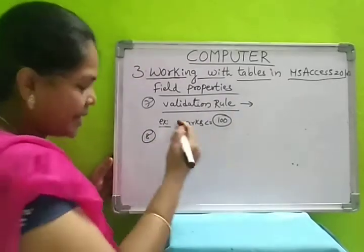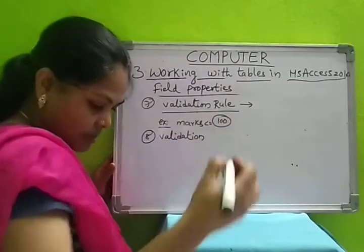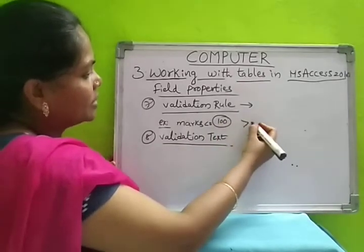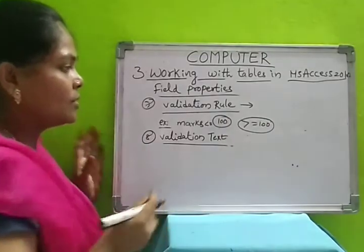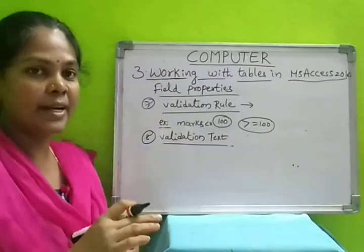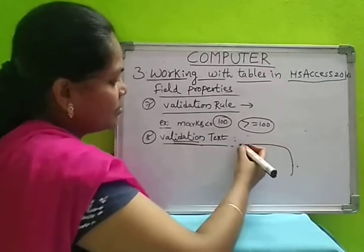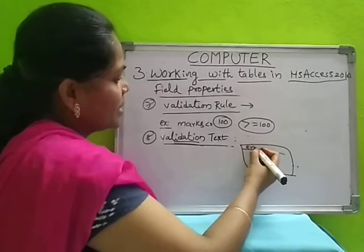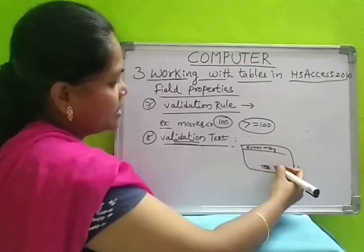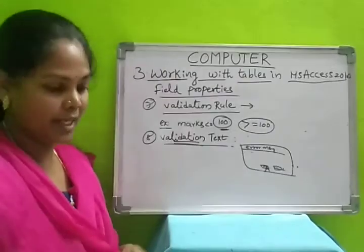Next is validation text. It checks whether any violation has happened or not. When someone enters more than 100 marks, an error message should be displayed — for example, 'Marks should be less than or equal to 100.' Whatever you mention in the validation text, that error message will be displayed for the user, so they can check and correct their entry.